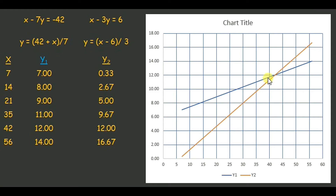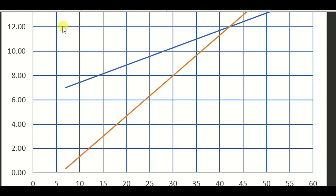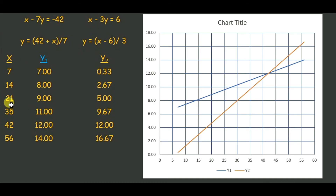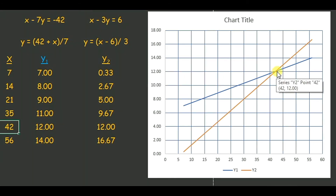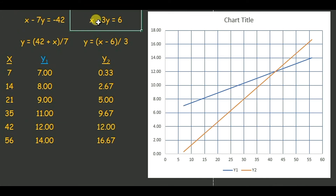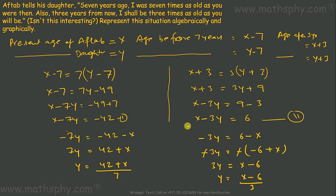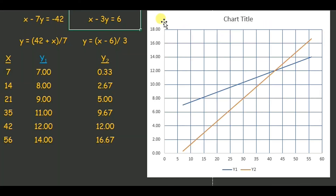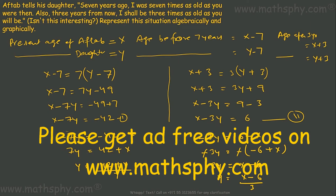You can see the point where Y₁ and Y₂ intersect is at X equals 42 and Y equals 12. This coordinate gives us the present ages: Aftab's age is 42 and his daughter's age is 12. So this was the algebraic representation — equation one and equation two — and the graphical representation of the situation involving Aftab and his daughter.